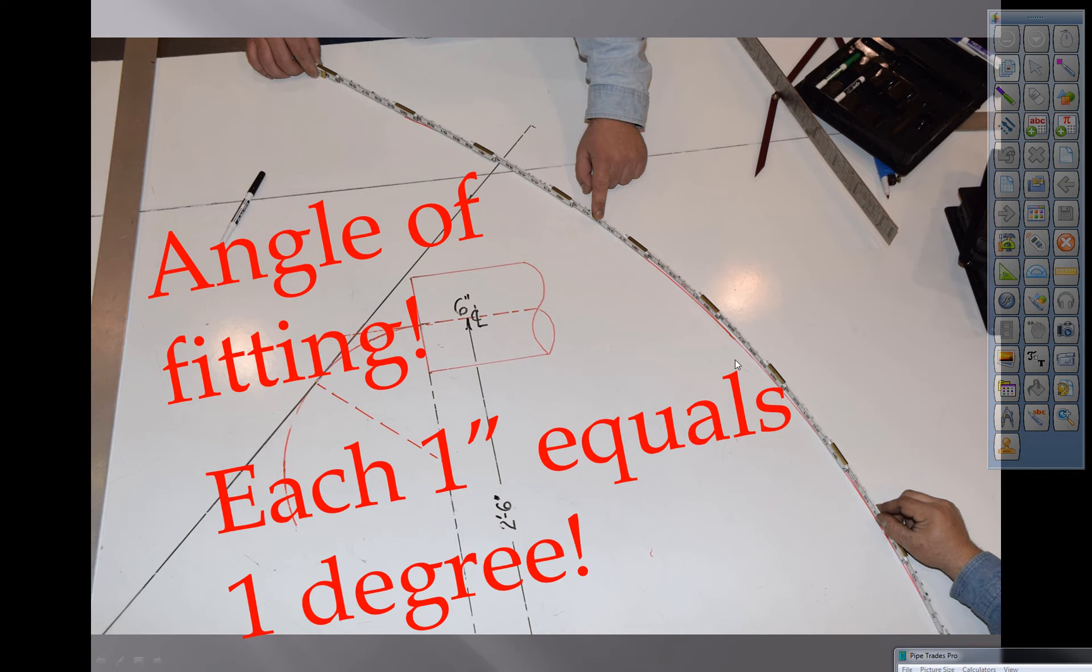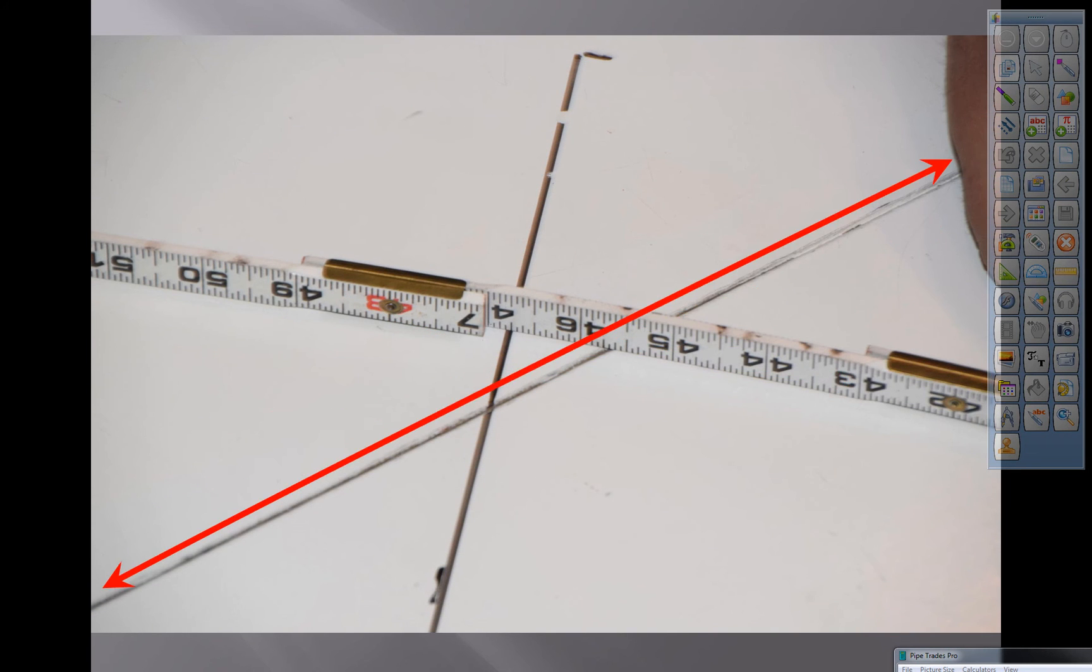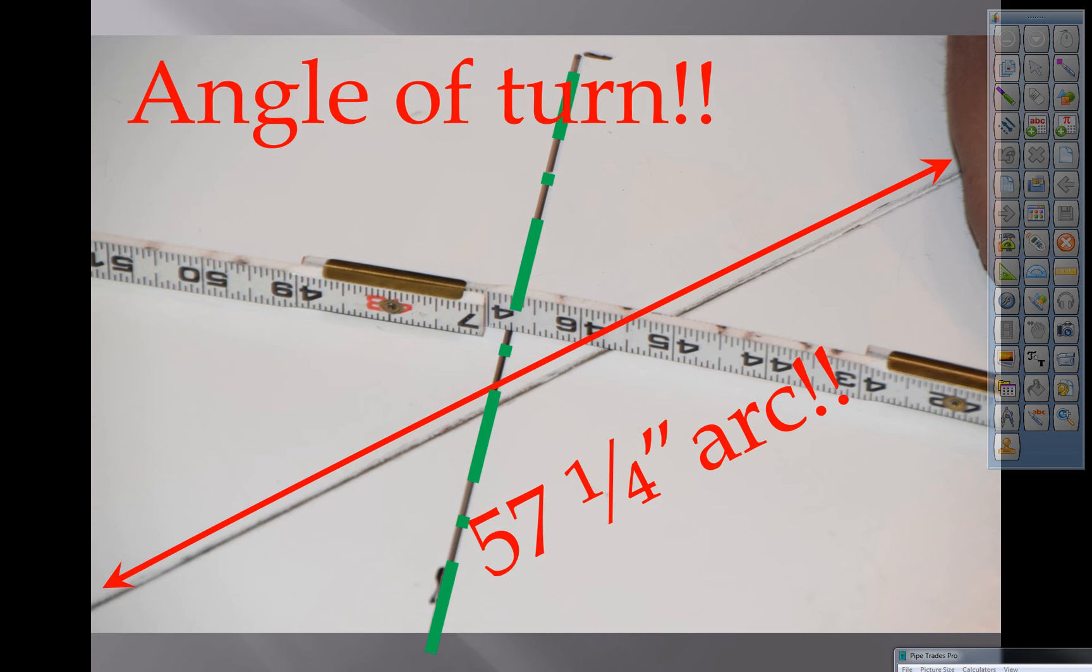That's the point we need to read. There's our 57 and a quarter arc. The green was our angle turned. So you can see we have 46.75. So that is our angle of fitting. 46 and 3 quarters out of a 6 inch long radius 90. So we know the fitting takeoff is 3 and 7 eighths.